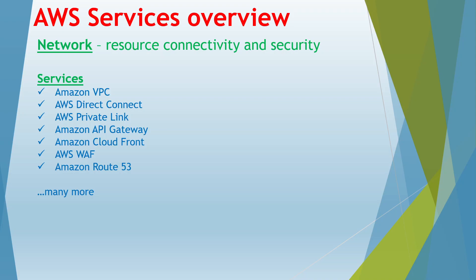Amazon Direct Connect and AWS PrivateLink are used to establish direct or private connections between AWS services and on-premise systems. Amazon API Gateway is also available, which can act as a load balancer to distribute requests from clients to different services. Amazon CloudFront acts as a content delivery network to serve content very fast using its edge nodes. AWS WAF is a web application firewall, and Route 53 is a domain name service. All these services come under the network module.